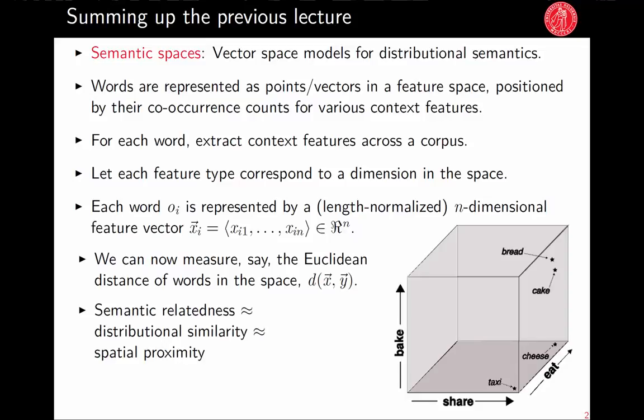There are three levels of abstraction here. We want to find semantically related or similar words. By the distributional hypothesis, we approach semantic similarity through distributional similarity — words with similar contexts are probably semantically similar. We model distributional similarity in terms of being geometrically close in a vector space model, measurable via Euclidean distance or cosine measure.